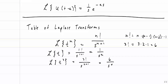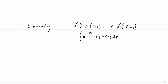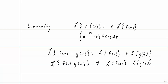In order to use transform tables, we need to know a couple of properties. Laplace Transforms are linear: if I have the Laplace Transform of a function times a constant, I can pull out that constant and then simply look at the Laplace Transform of the function. Since our integration is also linear, we can just pull out that constant c. In addition, the Laplace Transform of the sum of two functions is simply equal to the Laplace Transforms of the functions added together. To be clear, the Laplace Transform of f of t times g of t is NOT equal to the Laplace Transform of f of t times the Laplace Transform of g of t.